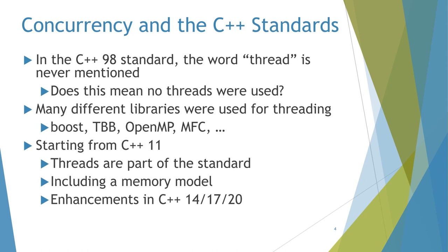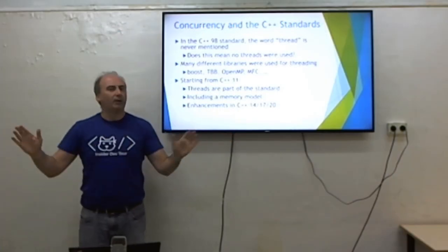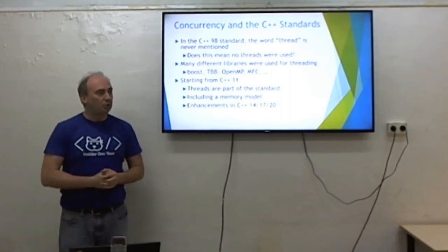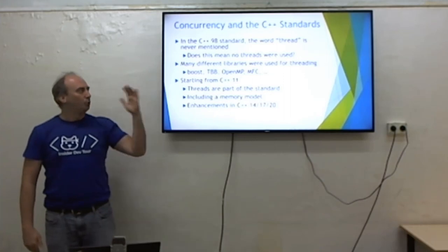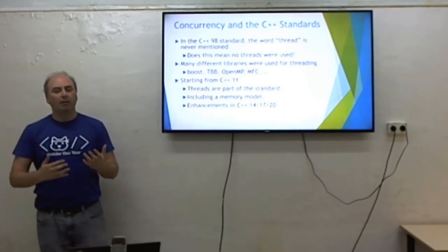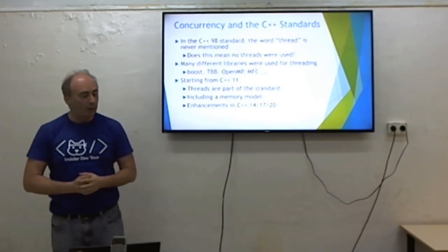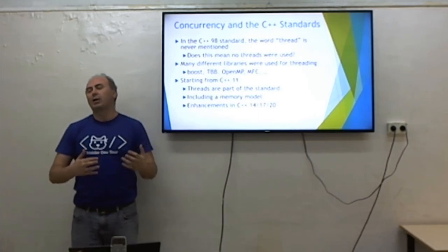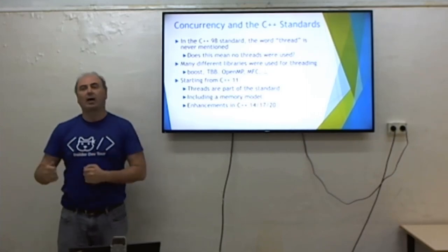In C++98, the word 'thread' is not mentioned. Nobody actually wrote threads in C++98. All programs were just single-threaded — well, probably not, but every compiler did whatever it wanted. There was no standard behavior. There were various libraries like TBB, Boost, and OpenMP to do multi-threading. Finally in C++11 we have the word 'thread' and something called the memory model, which describes the rules for accessing memory between multiple threads.